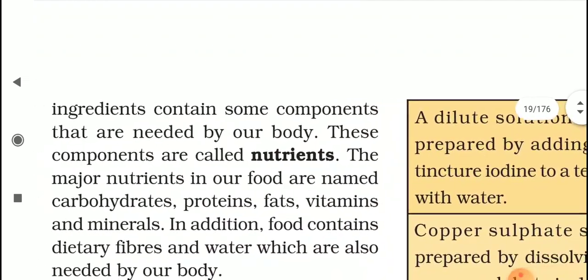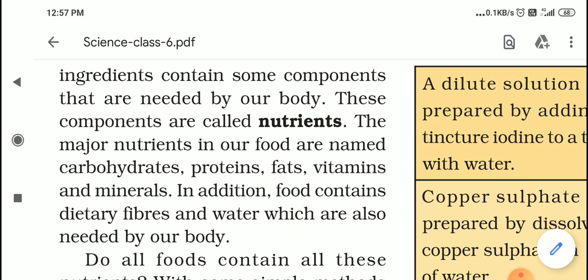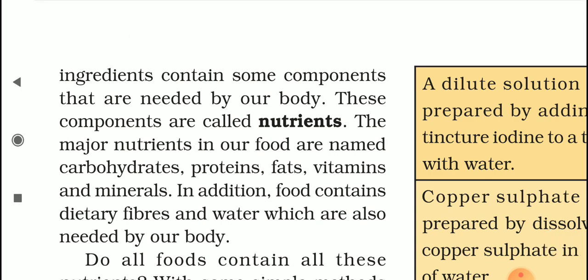These ingredients contain some components that are needed by our body. These components are called nutrients. For example, while making chicken curry we need chicken, spices, ghee, and water. Chicken contains proteins — the basic nutrient that chicken contains is protein. Similarly, while making kheer, the basic ingredients are rice and milk, and rice contains carbohydrates. We get carbohydrates from rice.